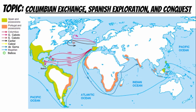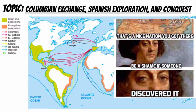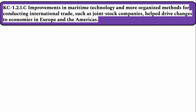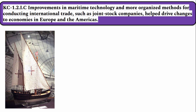Most folks know this part of the story: the Columbian Exchange, Spanish exploration and conquest. In 1492, Columbus arrives in the western hemisphere when he sails on behalf of Spain to the Caribbean. It is odd to discover something that anywhere between 30 to 70 million indigenous people were living in. While Spain is first, Portugal had already been on the move as well — Vasco de Gama succeeded in sailing around the tip of Africa into the Indian Ocean, which further piqued interest in accessing the Asian market. Part of the reasons these expeditions were able to take place was because of technological advancements. Improvements in maritime technology and more organized methods for conducting international trade, such as joint stock companies, helped drive changes to economies in Europe and the Americas.